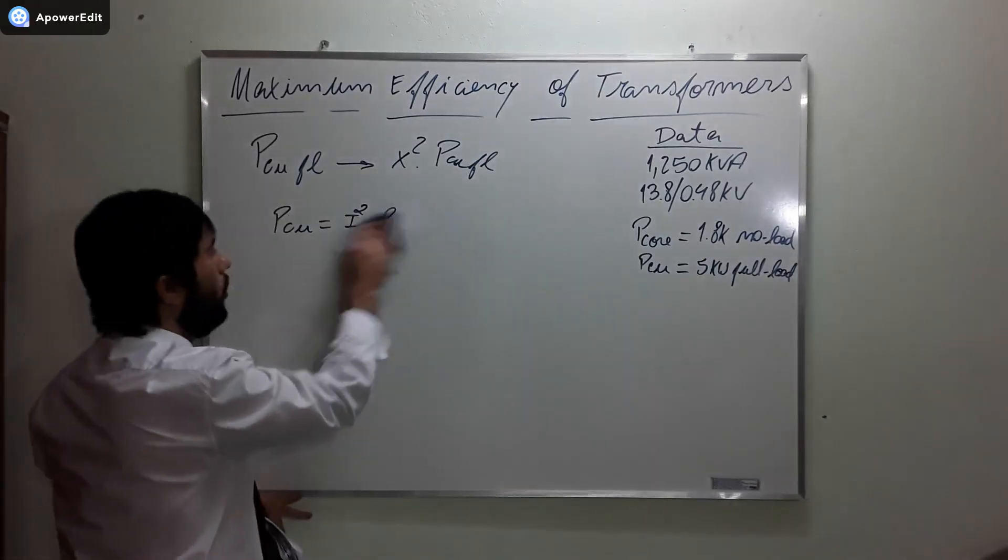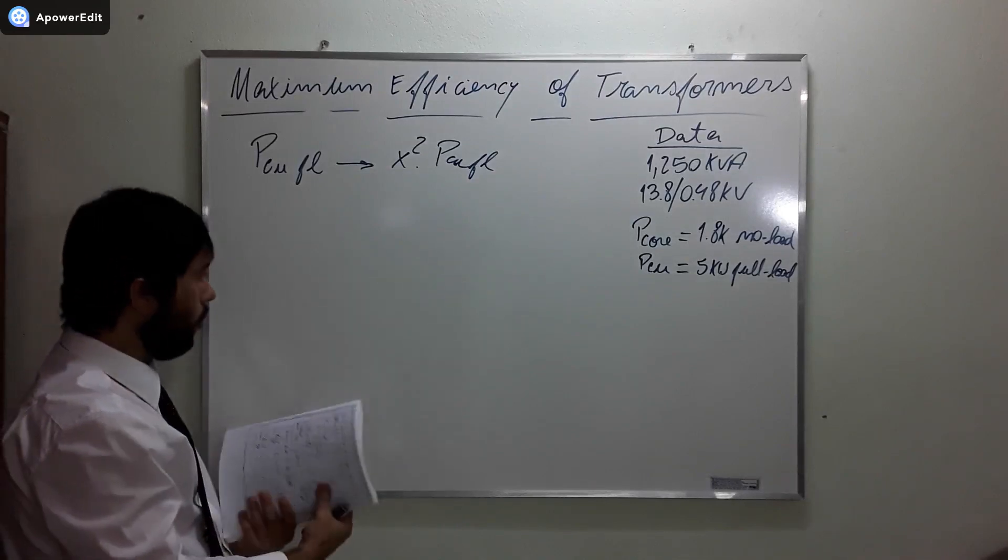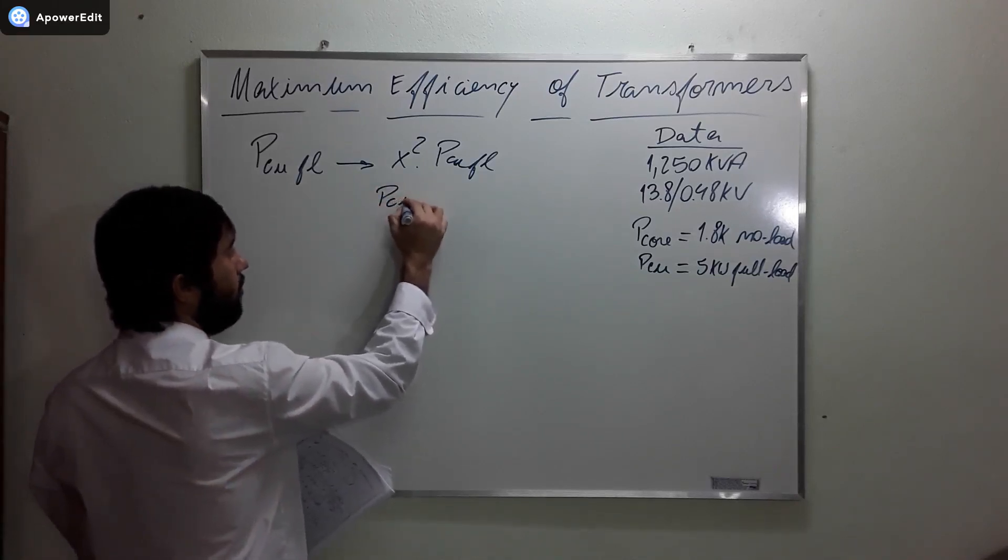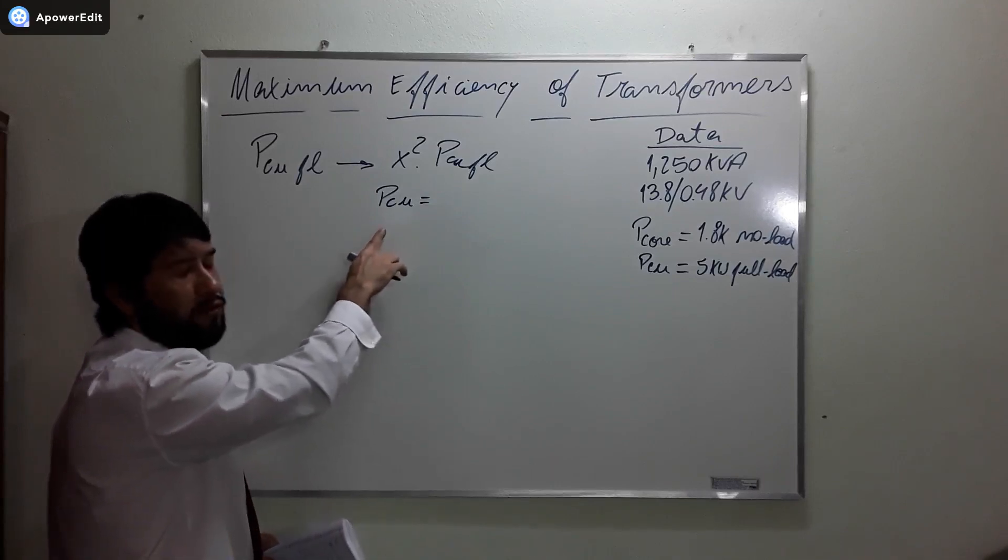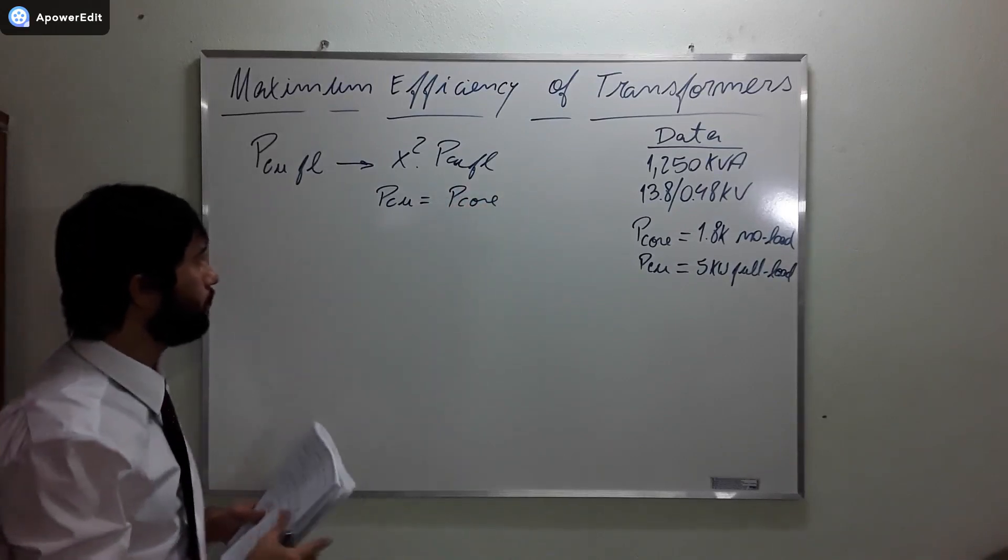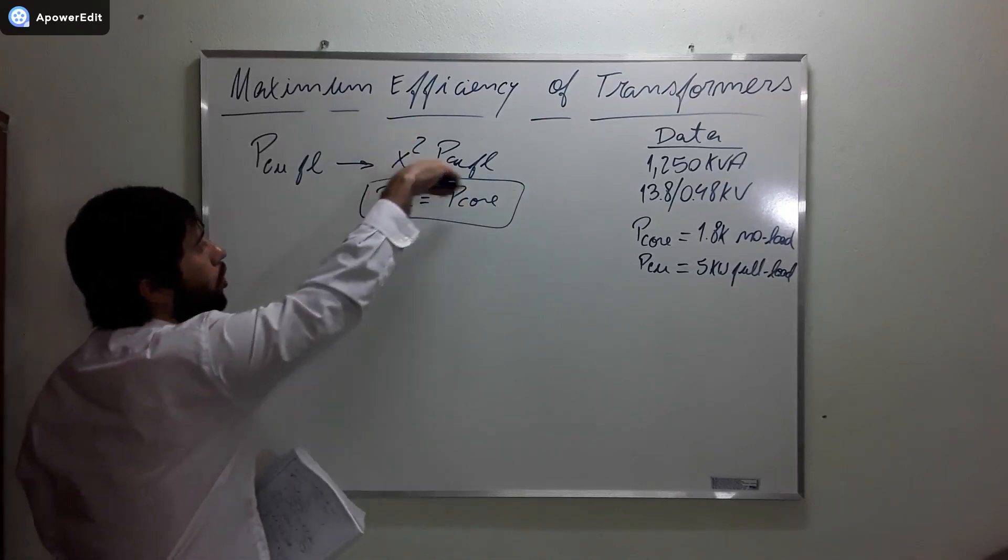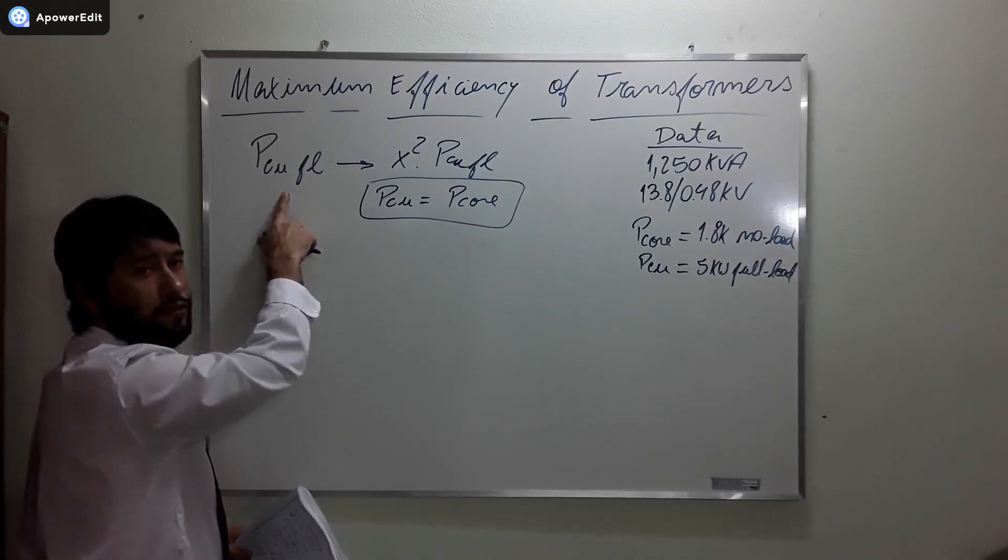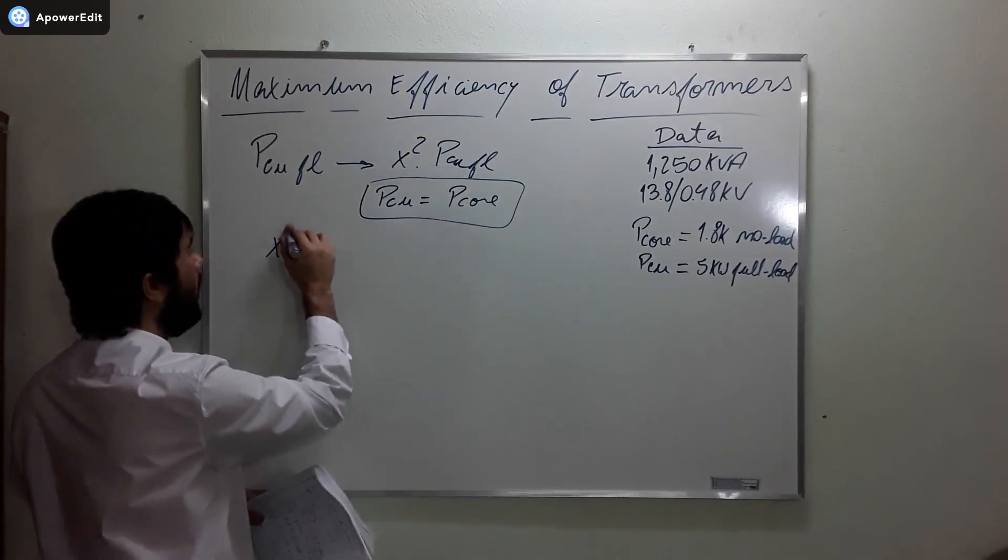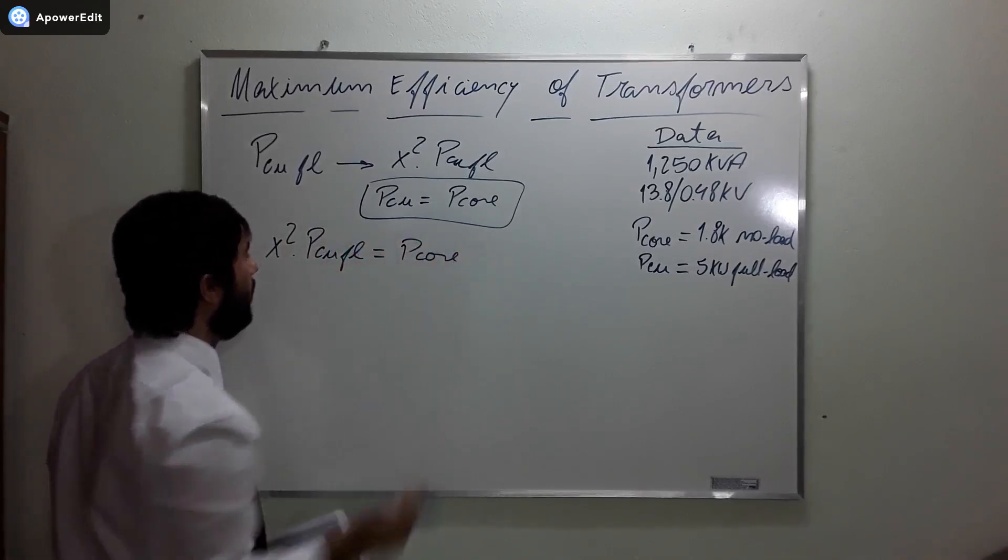Knowing this, we can go ahead and we are going to see that we want this. We have already concluded that the maximum efficiency is reached when the copper losses are equal to the core losses. So this is what we are going to use. We want this portion here, not the copper losses at full load. We want this portion here to be equal to the core losses. So x squared times PCUFL equal to Pcore.